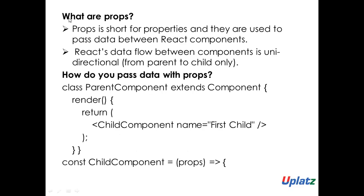What are props? Props is short for properties and they are used to pass data between React components — which means it will pass data values from one component to another component. The React data flows in a unidirectional manner, which means from parent to child only. That is how the props work — props will be in the child component only, flowing from parent to child.